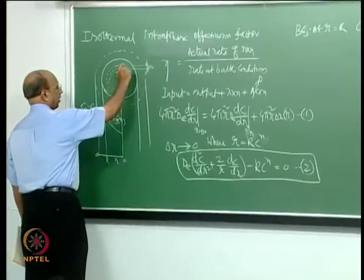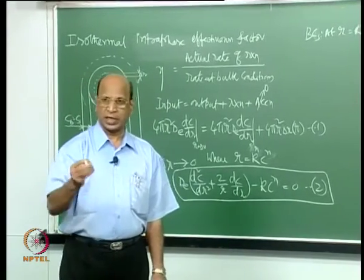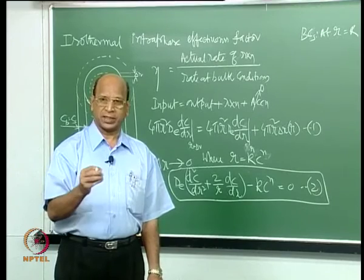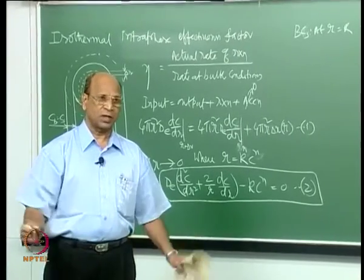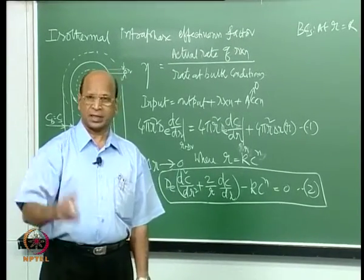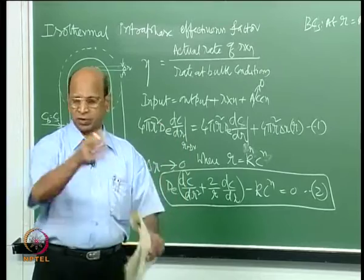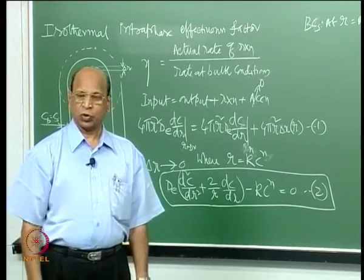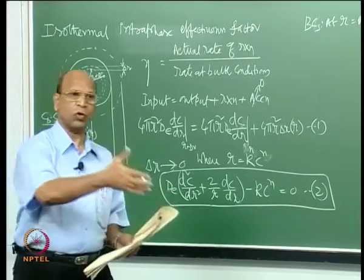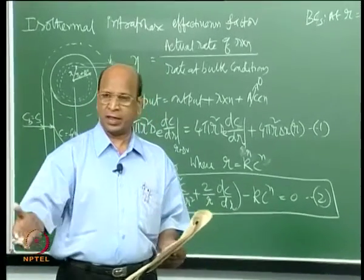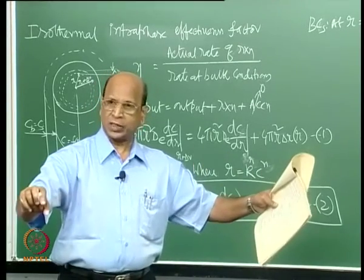In any system with a distributed parameter — where there is a change with space — you must write the balance over a differential element. The beautiful exception is the mixed flow reactor where concentration and temperature are uniform everywhere spatially — that is called a lumped parameter system, where you see changes only between inlet and outlet.